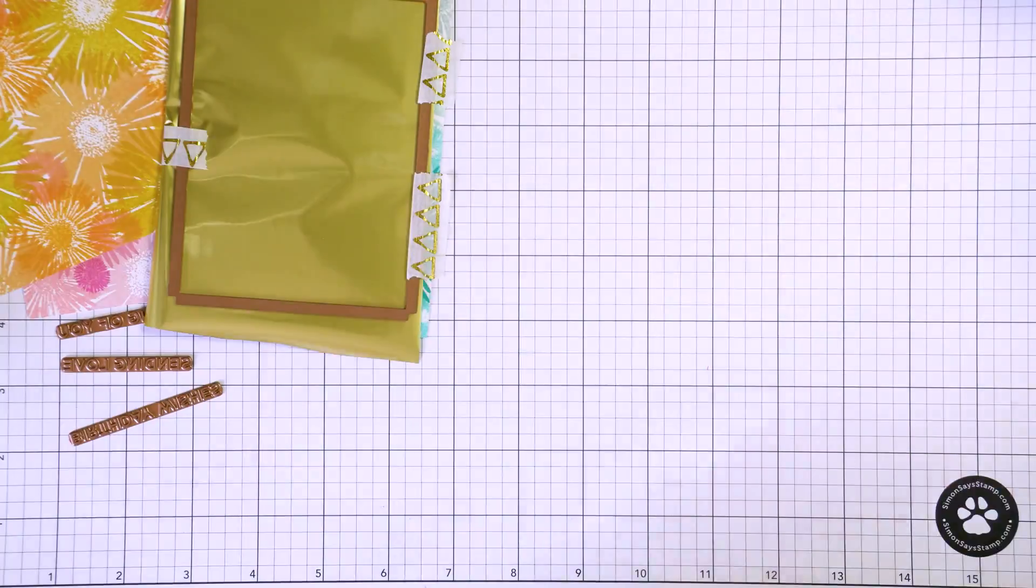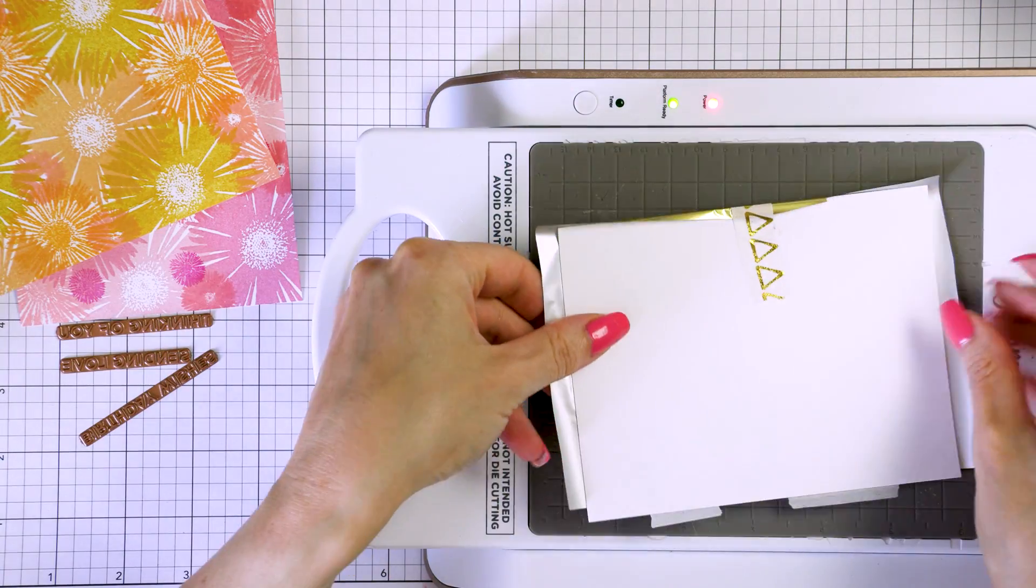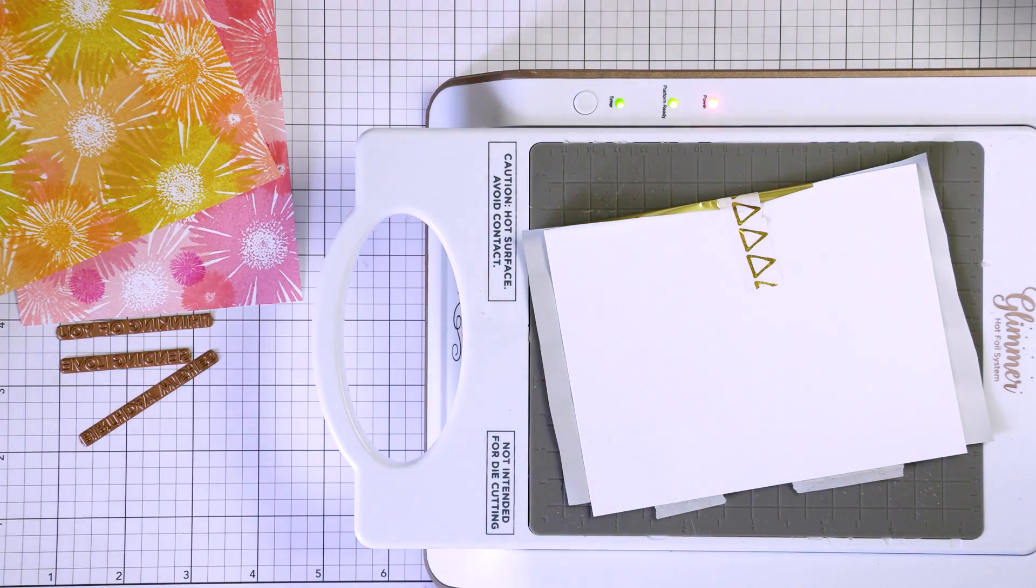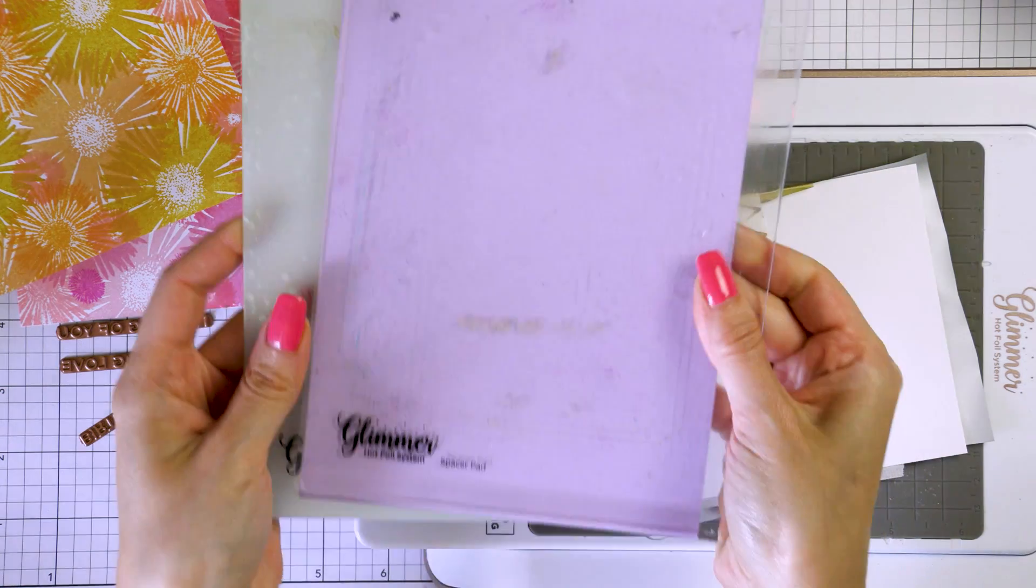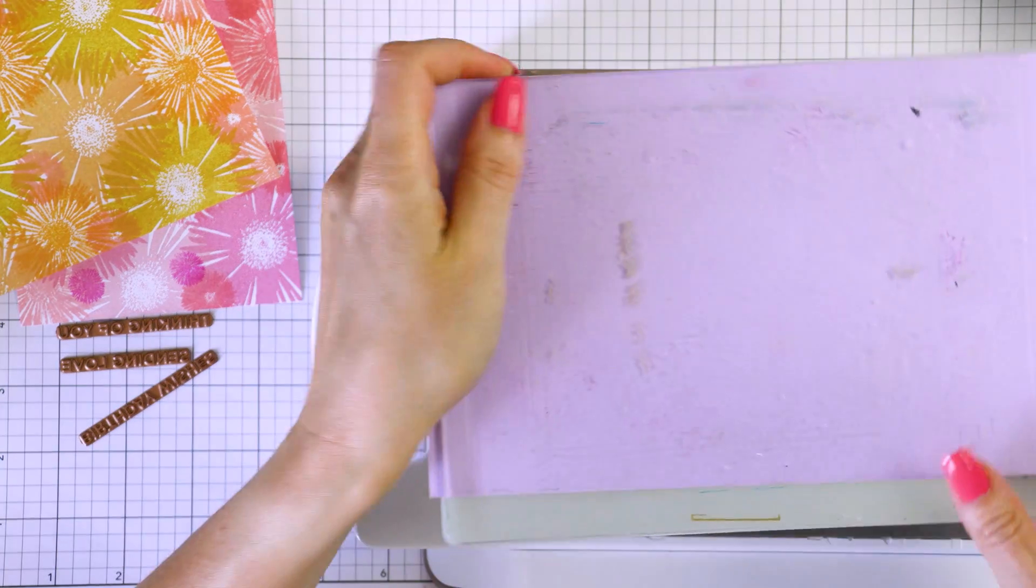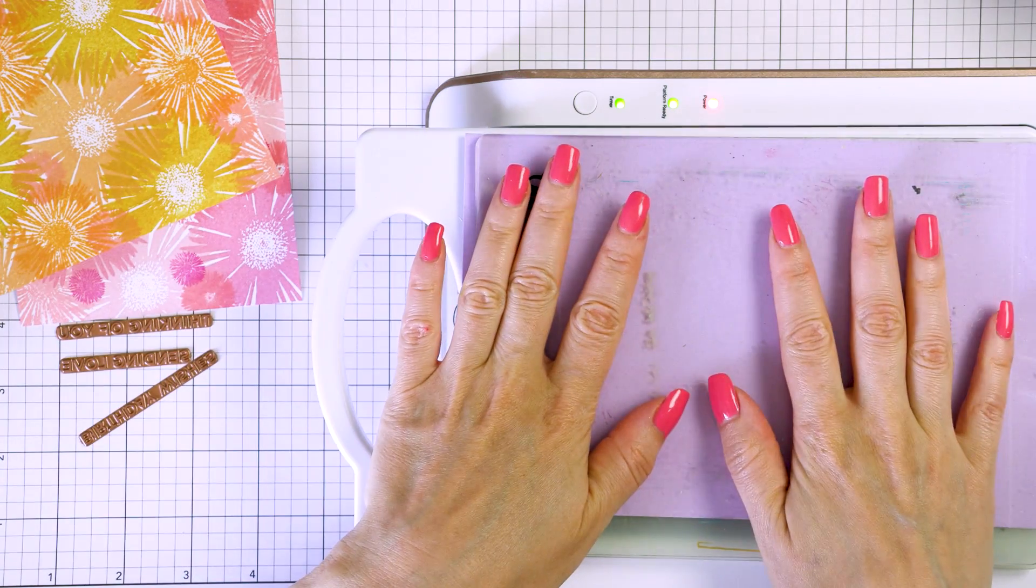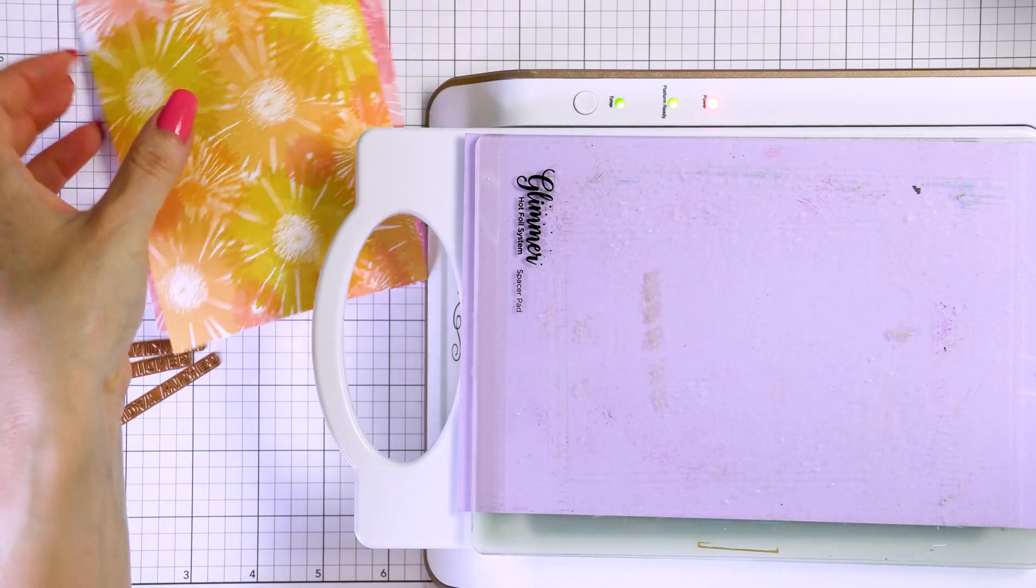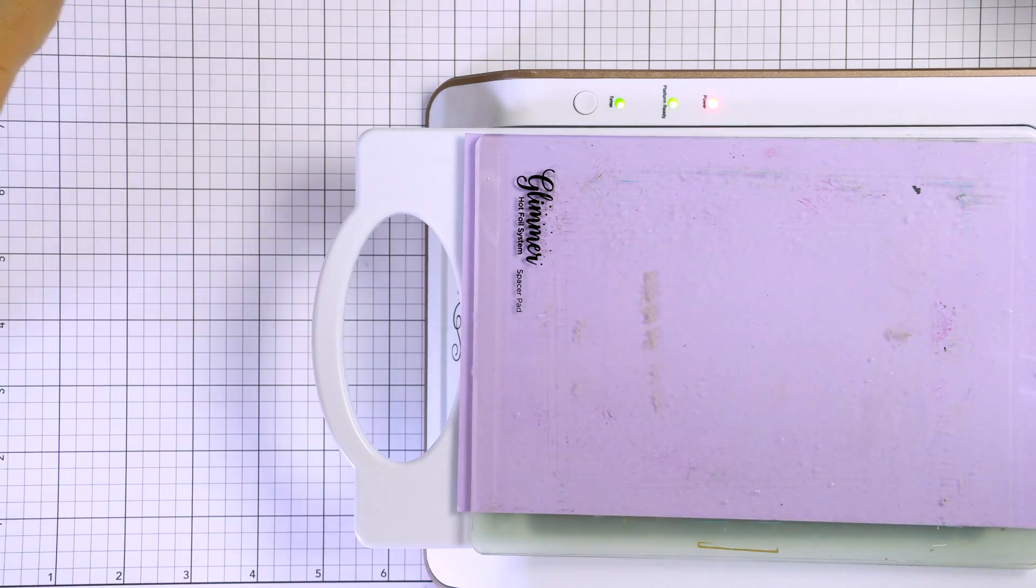Next, bring in your hot foil machine. I'm using the glimmer hot foil machine from Spellbinders. Place your panel with a glimmer plate and foil onto the surface of the machine. My machine has been on for a few minutes already, so it is ready to foil. Press the timer button and wait for about a minute for the machine to heat up your plate. At this point, I like to add my plates and shims on top. Now I do add one cardstock shim to increase the pressure.